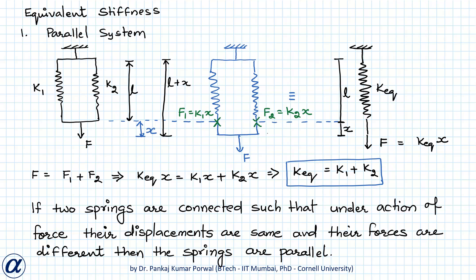In this lecture we will learn about equivalent stiffness of systems which are a combination of beams and springs. We'll start with a parallel system of springs. Here we have two springs with stiffnesses k1 and k2 connected in parallel, and a force F is acting in the downward direction.